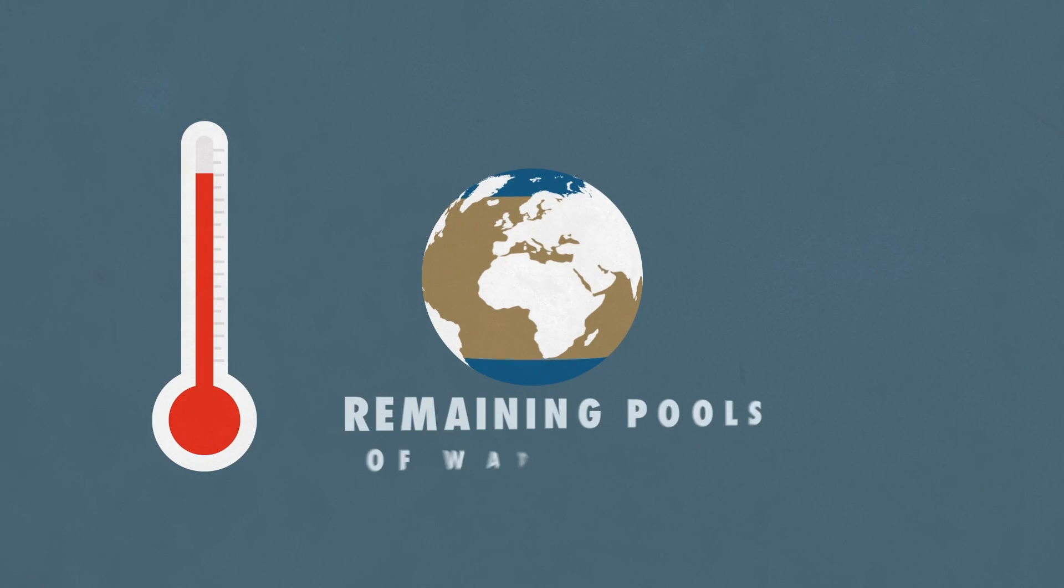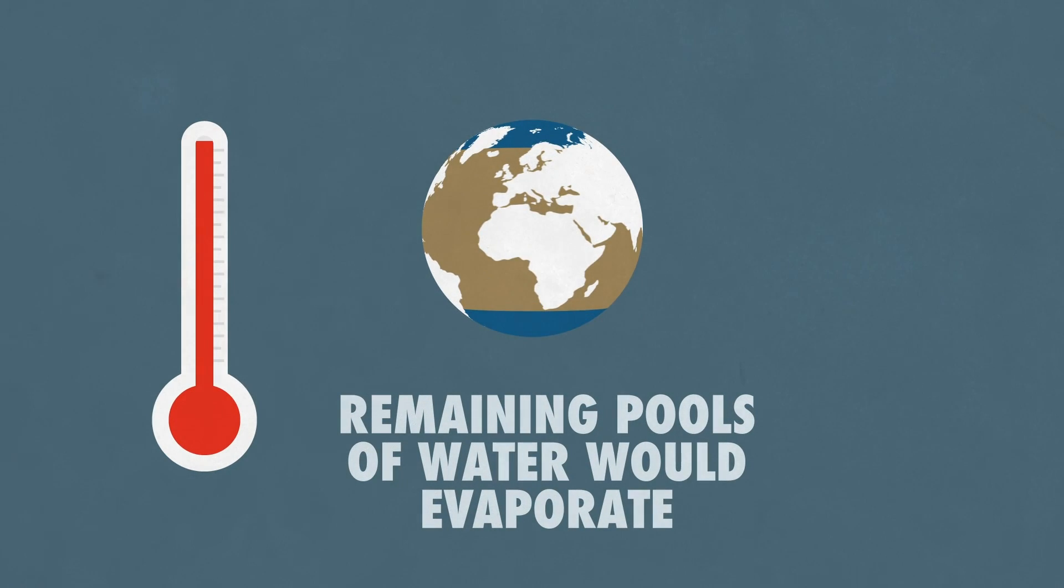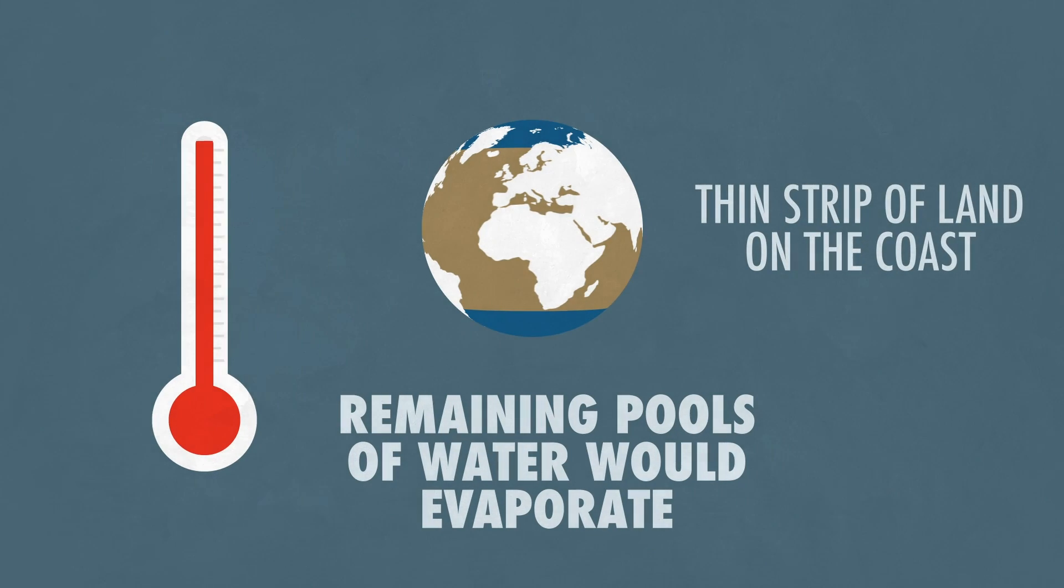With the increasing temperatures, all remaining pools of water would evaporate and end up in the poles due to the new wind patterns, and the only viable place for life to exist would be a thin strip of land on the coast.